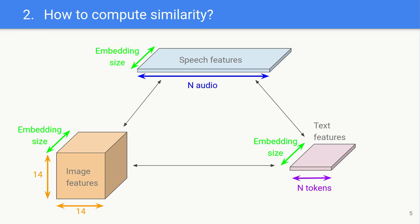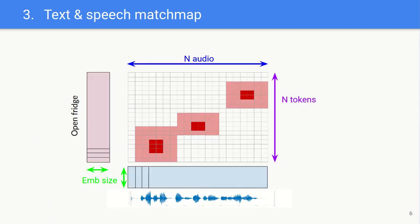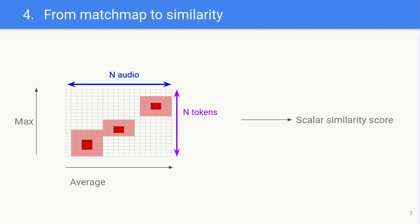I'm going to give an example with the speech and text similarity. First, we compute what we call the matchmap, which is the result of computing the inner product between all elements of the feature representations. After that, we compute a scalar similarity score for the whole matchmap. One way would be to do the average of all the matchmap. But empirically, we found out that it's better to do the maximum in one dimension and the average in another.